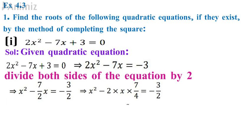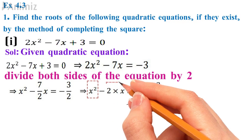So I am multiplying this term by 2 and dividing it by 2. So I will be getting x² - 2 × x × 7/4, which is equal to -3/2. Now I have x² - 2 × x × 7/4.